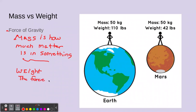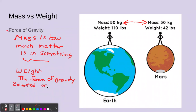The force of gravity determines your weight. Earth is much bigger and has more gravity than Mars, so you would weigh less on Mars but have the same mass. Your weight changes on different planets because of gravity, but your mass will not. Remember: mass is how much matter is in something.